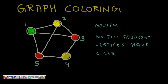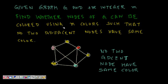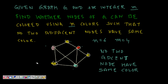We have to use the minimum number of colors to assign colors to all nodes. So, formally: given a graph G with vertices and edges and a positive integer m, find whether the nodes of G can be colored using m colors such that no two adjacent nodes have the same color. Here we see six nodes colored using four colors, so m equals four.